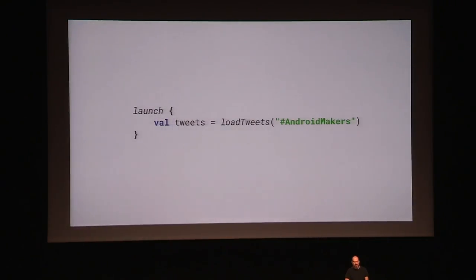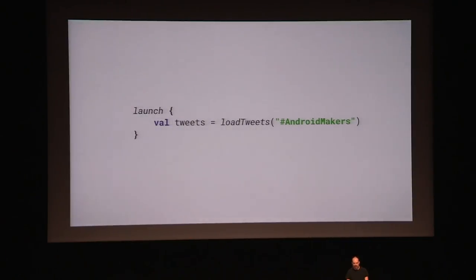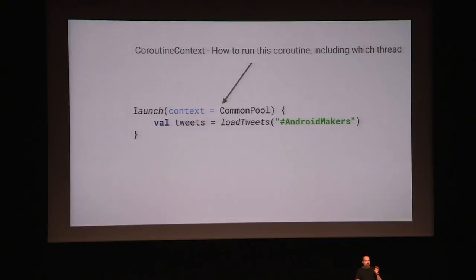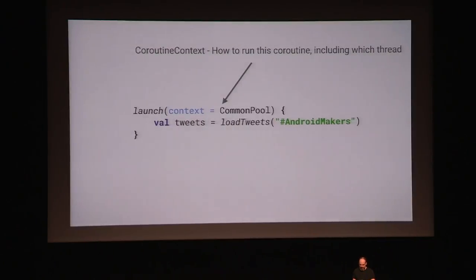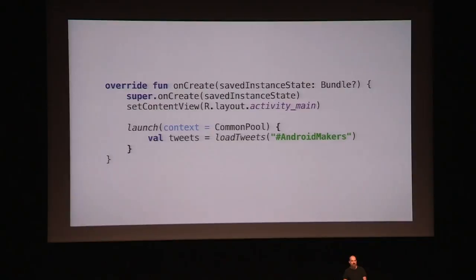Let's create our first coroutine. Coroutines are created using coroutine builders, and there are a number of them. Launch is the most basic one — it does exactly what it says, it launches a coroutine. By default it will run on a background thread. There are still threads, but you can specify which thread it should run on using the context parameter. The coroutine context basically says how to run this, including which thread it will be running on. A coroutine can run on one thread, get suspended, and run on another thread next.